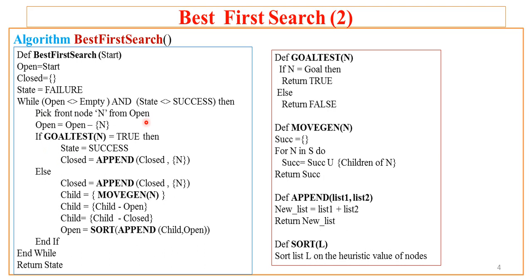While open is not empty and state is not success, the algorithm picks the front node from the open and removes it. It then checks whether the given node N is a goal by calling the goal test function. If N is the goal, it returns true, otherwise false. If goal test returns true, state is set to success and the node is added to closed. If false, the algorithm goes into the else part and adds node N to the closed.